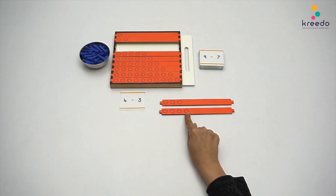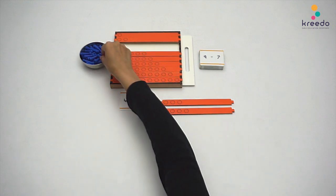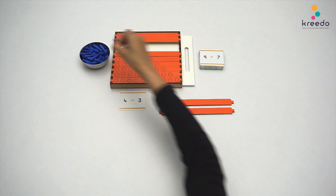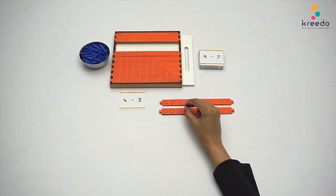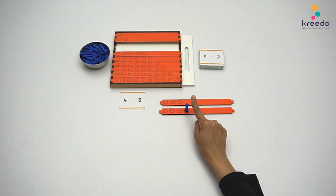Point to the one circle on the strip of 4 and say, 4 has one more place. So, we are keeping a skittle here. Place a skittle on the circle of strip 4.